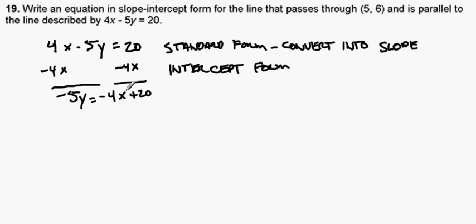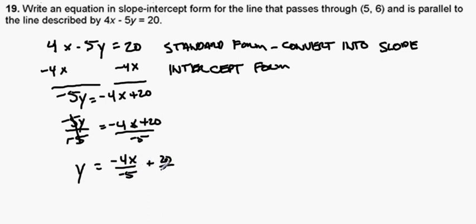To complete this conversion, let's go ahead and divide both sides of the equation by negative 5. So, these negative 5s cancel and I'm left with y. This turns into negative 4x over negative 5 plus 20 over negative 5.